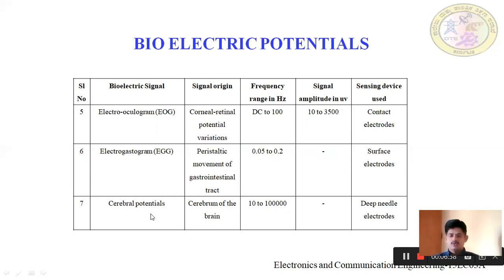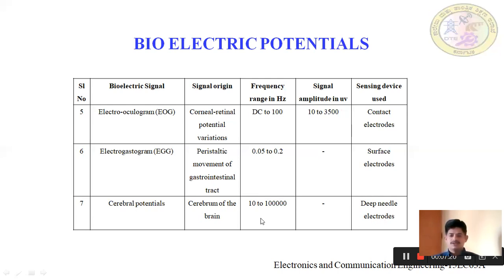Cerebral potential is related to the brain. In the brain we have different sections like cerebrum and brainstem, and the cerebral potential is the potential from the cerebrum of the brain. Frequency will be 10 to 100,000 hertz. Deep needle electrodes are used to measure cerebral potentials — you might have observed that needles are placed onto the scalp to record the signal.